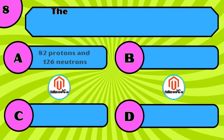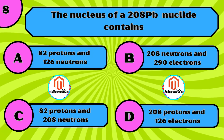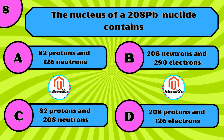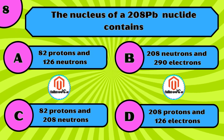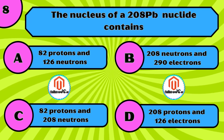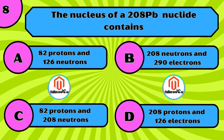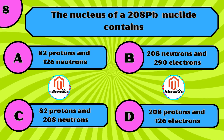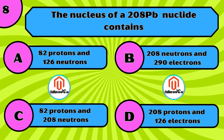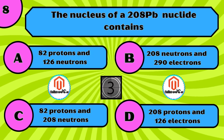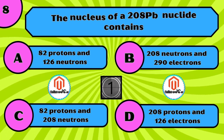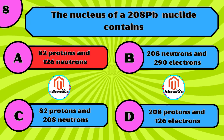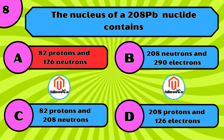The nucleus of a Pb-208 nuclide contains: A) 82 protons and 126 neutrons, B) 208 neutrons and 290 electrons, C) 82 protons and 208 neutrons, D) 208 protons and 126 electrons. The correct answer is A, 82 protons and 126 neutrons.